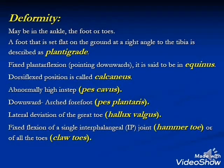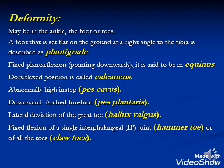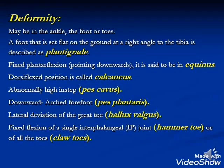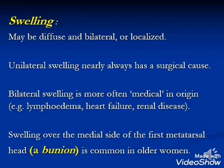Deformity may be seen in the ankle, foot, or toes. A foot flat on the ground at a right angle to the tibia is described as plantigrade — normal. Fixed plantar flexion pointing downwards is equinus. Dorsiflexion position is called calcaneus. Abnormally high instep is called pes cavus; downward arch is pes planus. Lateral deviation of the great toe is hallux valgus. Fixed flexion of a single interphalangeal joint is called hammer toe; of all toes, claw toe. Unilateral swelling usually has a surgical cause; bilateral swelling is more often medical — such as lymphedema, heart failure, or renal disease.